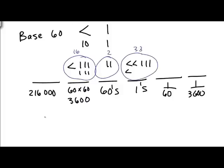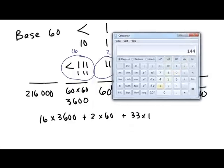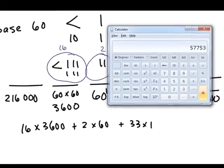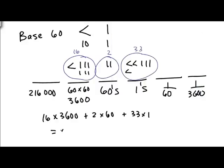Which is to say we're talking about 16 times 3,600 plus 2 times 60 plus 33 times 1. Which, let's just bust out a calculator and say 16 times 3,600 plus 120 plus 33 is 57,753 in base 10.